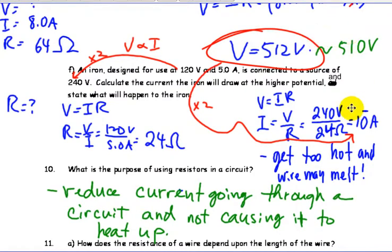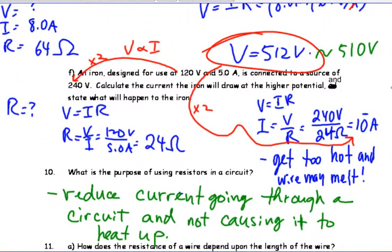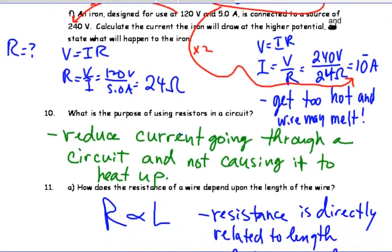Welcome back to Physics 30. This is the second part of the Part B booklet. So we looked at Ohm's Law. Now we'll look at resistance and resistivity.